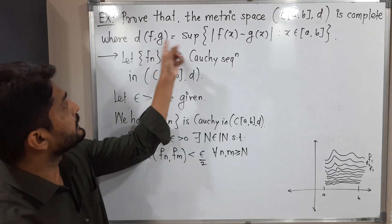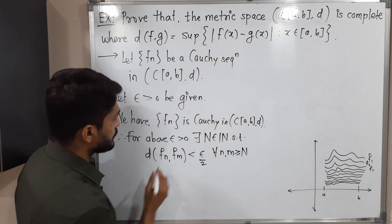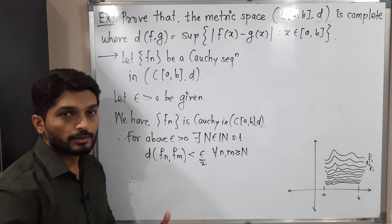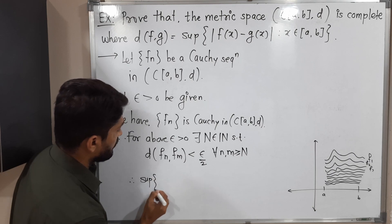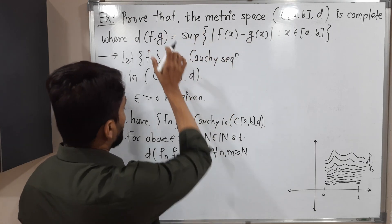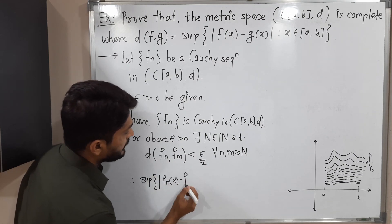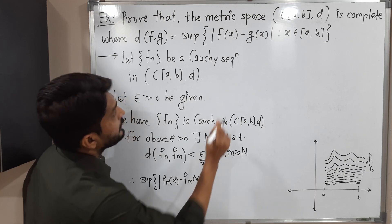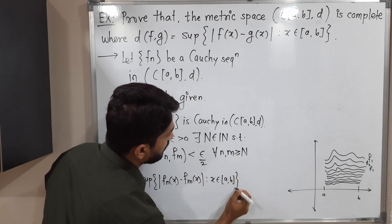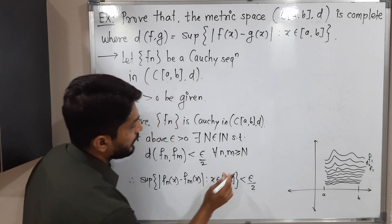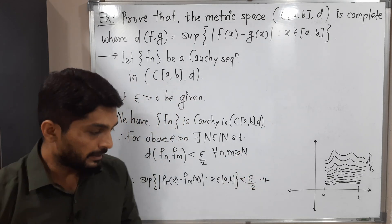What is the definition of d? It is the supremum. So using the same definition: supremum of |f_n(x) − f_m(x)| such that x belongs to closed interval [a,b] is less than epsilon by 2, for all n, m greater than or equal to capital N.